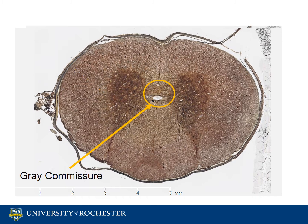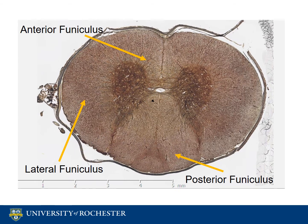The piece of gray matter that connects both sides and surrounds the central canal is called the gray commissure. White matter on the side near the thinner part of the gray matter is called the posterior funiculus. The lateral funiculus is located between the anterior and posterior funiculus.